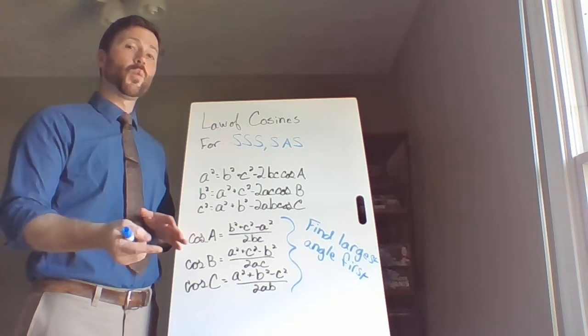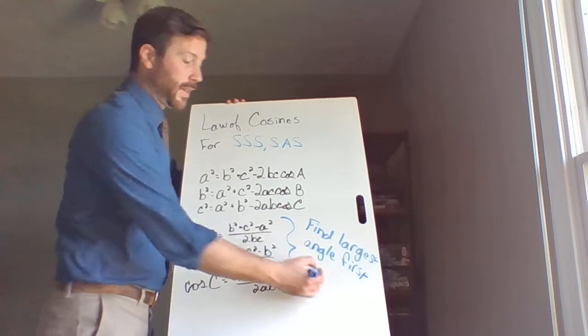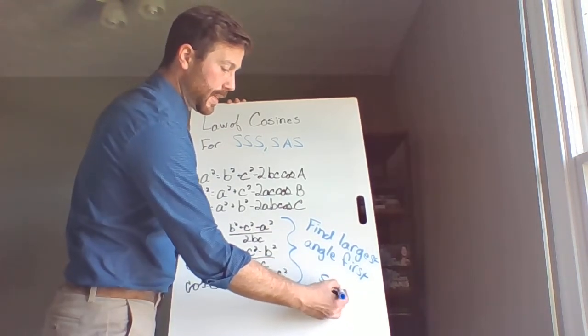Find the biggest one first, you avoid it altogether. So remember, the way that we know which one is the biggest angle is it's got to be opposite the biggest side. Now, so this is if you're given side, side, side.